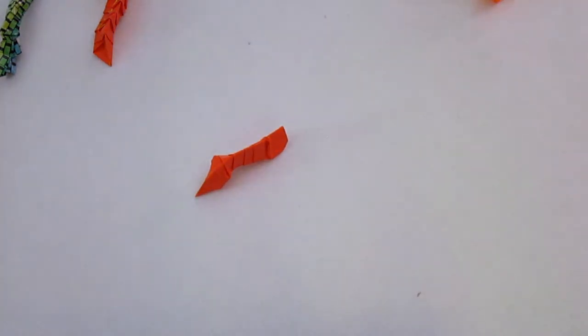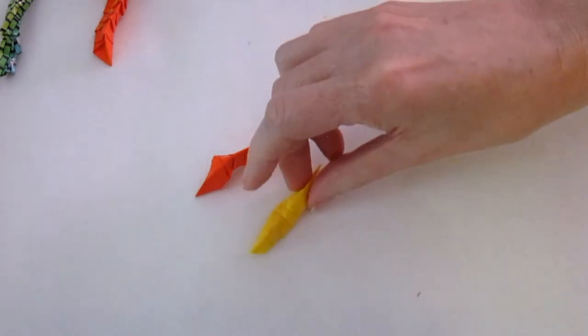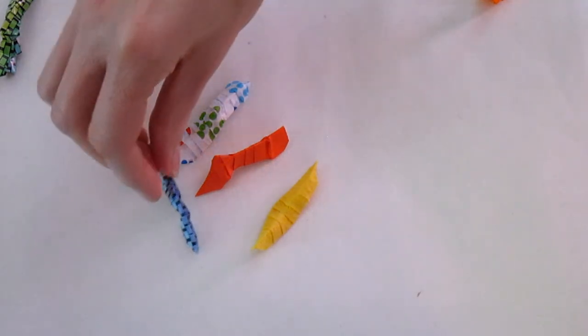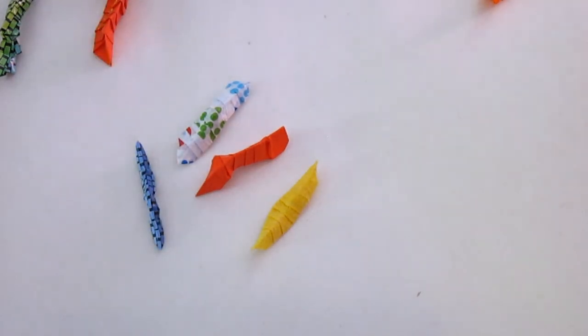You can also try this with other papers. This is crepe paper. This is also crepe paper. Here is some wrapping paper. And here is even some office paper. Thank you. You can see the directions at thedaywewenttothepark.com.